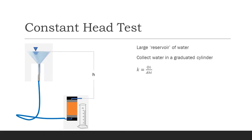In the constant head test, we will be using a large funnel as our reservoir. While the test is being conducted, we keep the water level of the funnel relatively constant — hence constant head. The water will travel into the permeameter and through the soil and will fall into a graduated cylinder. We keep track of the time as the water fills the graduated cylinder and record the volume of water collected and the duration of the water collection when we close the valve.